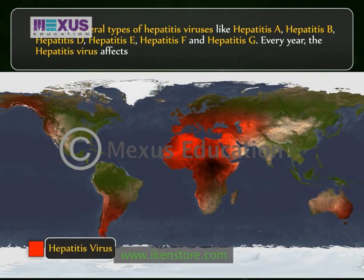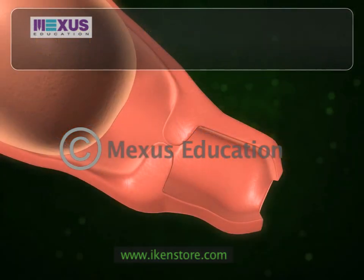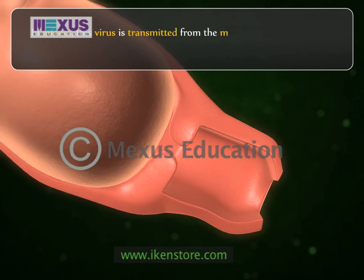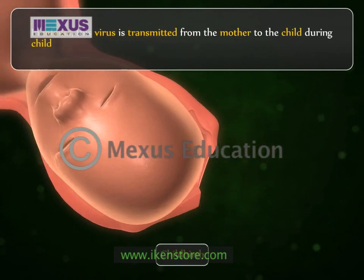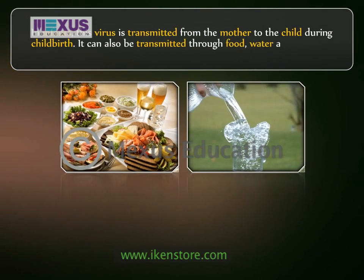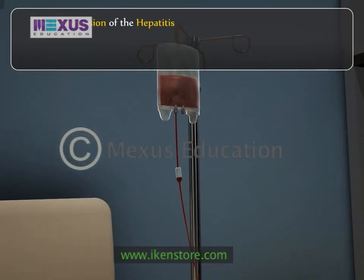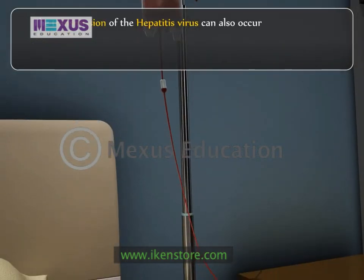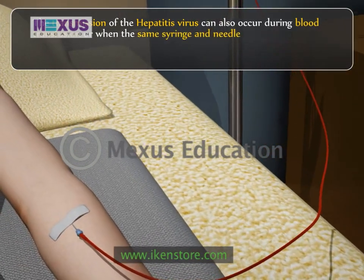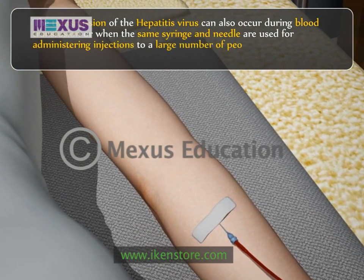Every year, the hepatitis virus affects about 200 million people all over the world. In infants, this virus is transmitted from the mother to the child during childbirth. It can also be transmitted through food, water, and milk. The transmission of the hepatitis virus can also occur during blood transfusion or when the same syringe or needle is used for administering injections to a large number of people.